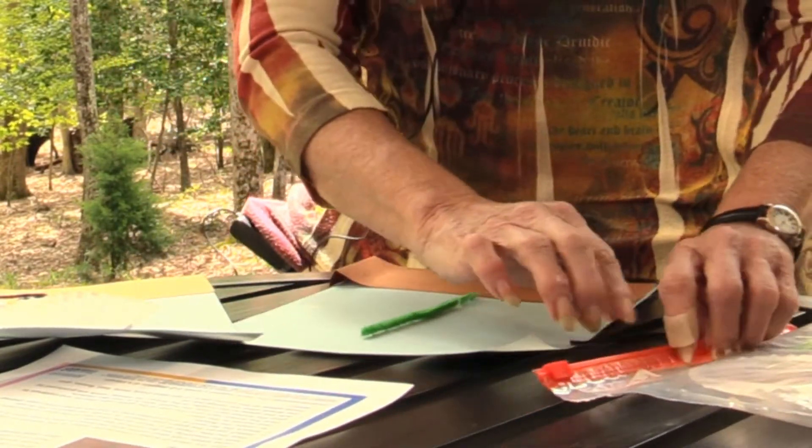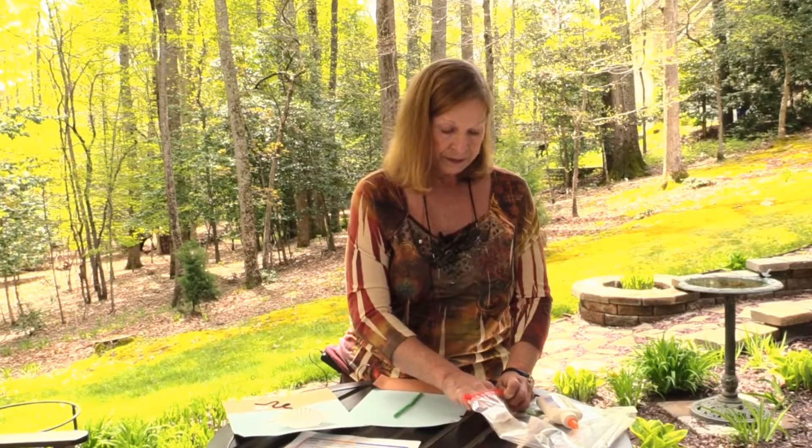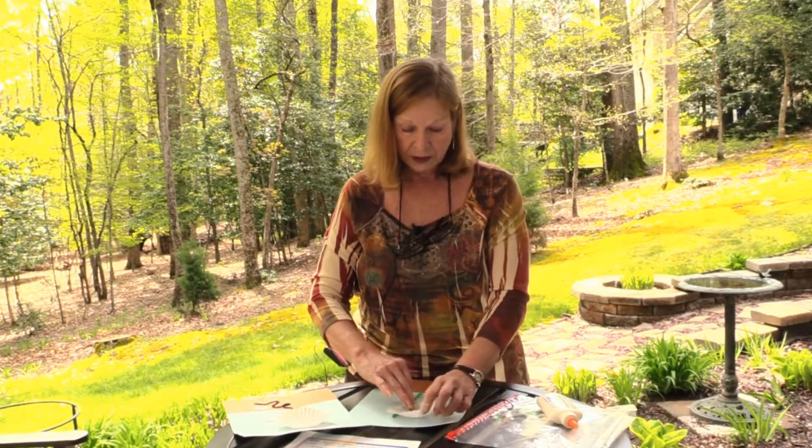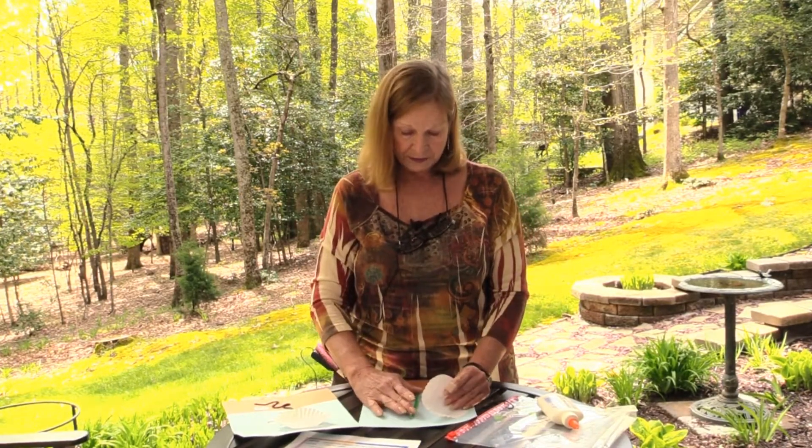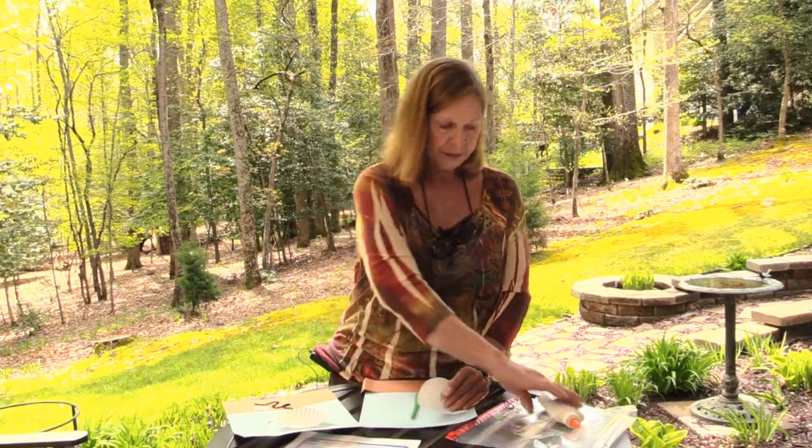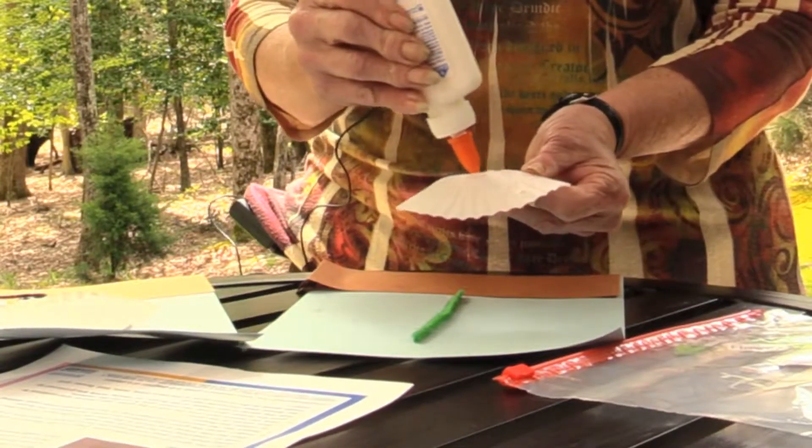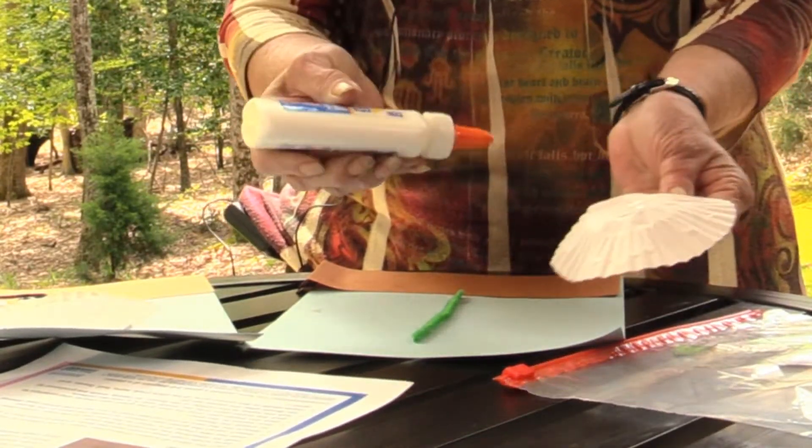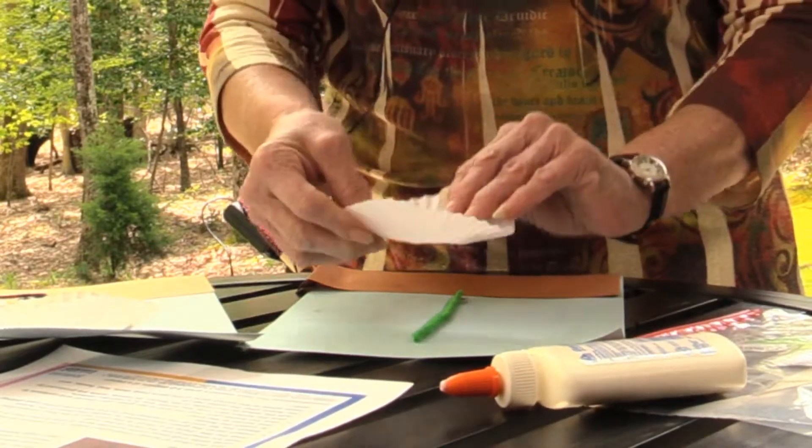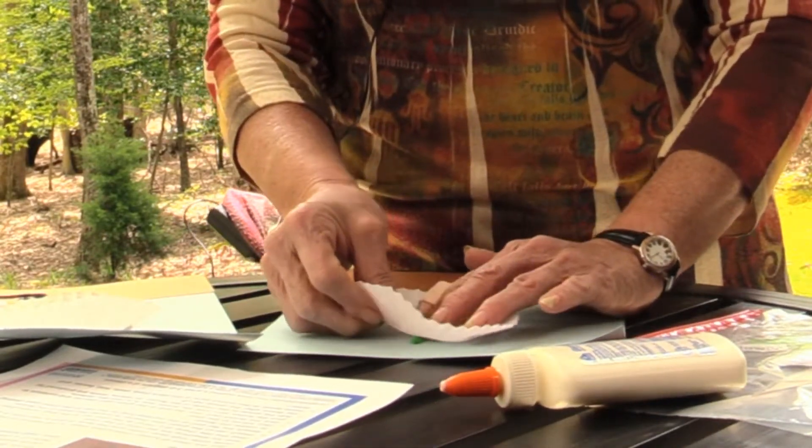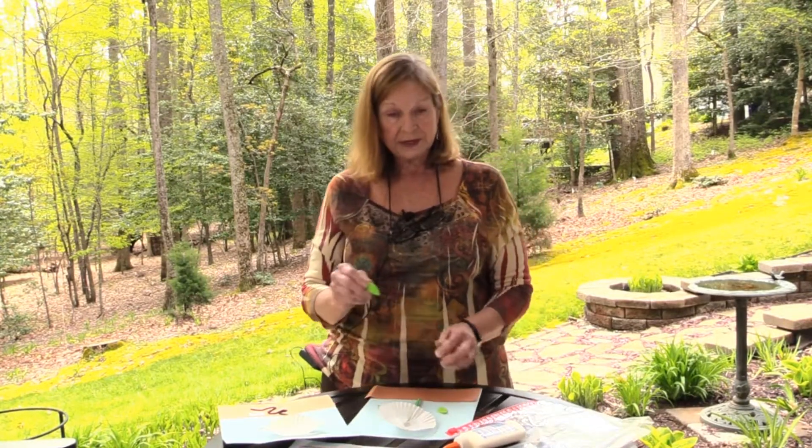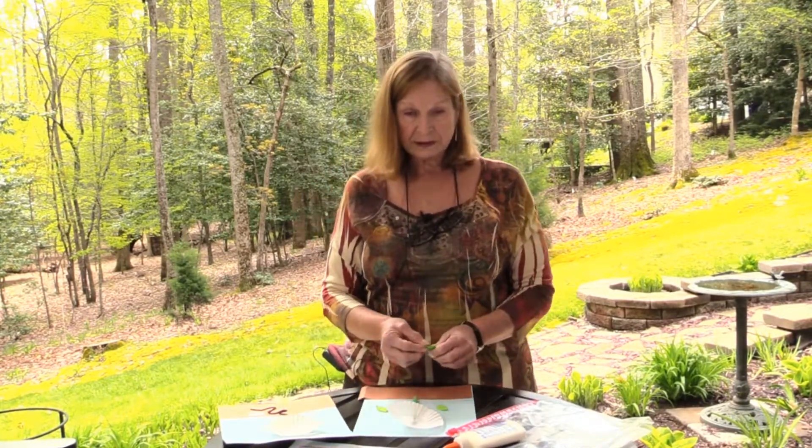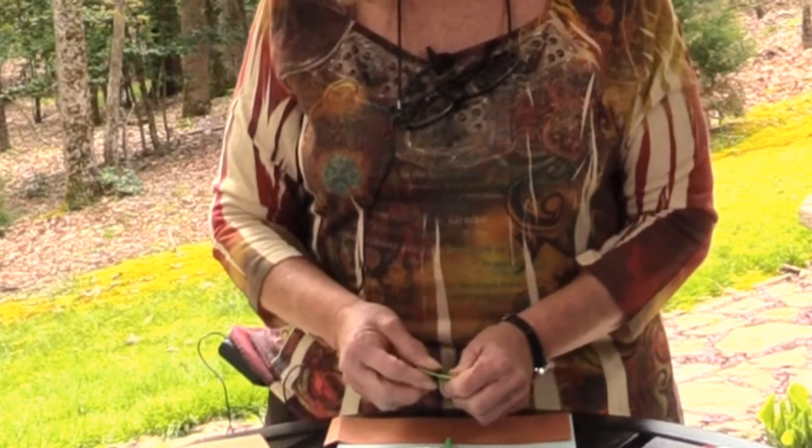Next I want to put my flower on. So I have our cupcake liner which will become the petals of our flower. Let's put a nice amount of glue on the center of the back of the cupcake liner and attach that. The leaves take the energy and so that's a very necessary part for your plant.